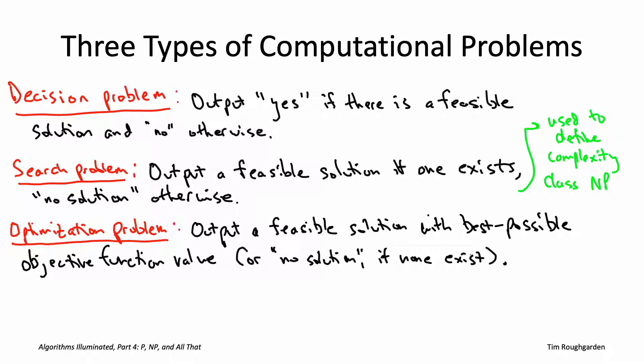You shouldn't really worry about the distinction though, as all the algorithmic implications of NP-hardness, including whether or not the P not equal to NP conjecture is true or false, all of that remains exactly the same no matter whether you define the complexity class NP in terms of decision problems or in terms of search problems.